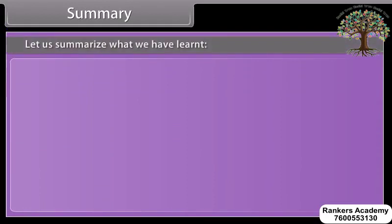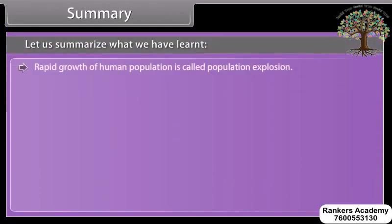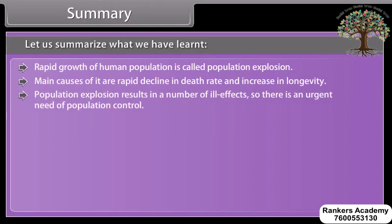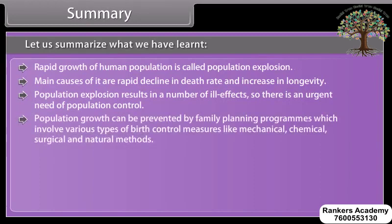Rapid growth of human population is called population explosion. The main causes are a rapid decline in death rate and increase in longevity. Population explosion results in a number of ill effects, so there is an urgent need for population control. Population growth can be prevented by family planning programs, which involve various types of birth control measures like mechanical, chemical, surgical, and natural methods.